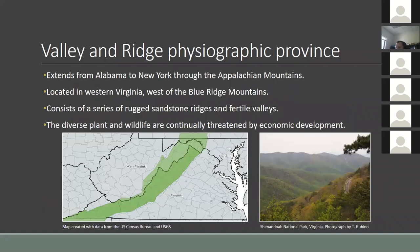I would now like to detail the study area for the project: the Valley and Ridge Physiographic Province that runs through the Appalachian Mountains in the western portion of Virginia. Physiographic provinces are distinct regions that share similar landforms and geologic structure. In the case of the Valley and Ridge Province, it consists of a series of parallel ridges and valleys. I decided to focus on this area because of its inconsistent geology, diverse wildlife population, and the emergence of conservation threats as populations increase.